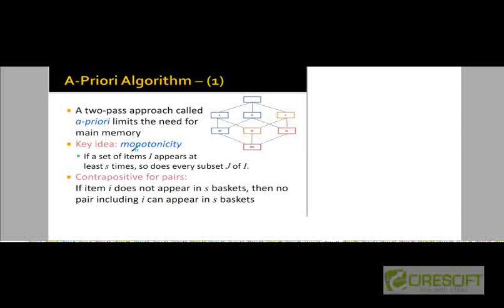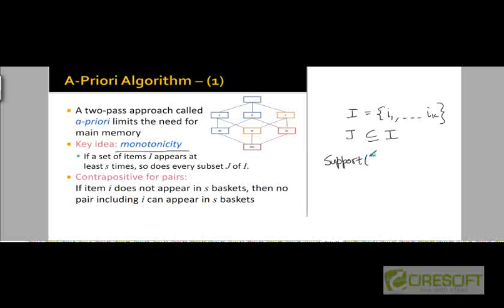The A Priori algorithm is going to use a property called monotonicity, which is defined as follows. If a set of items — call it I — appears at least s times, then so does every subset J of I. If we compare the support of J with the support of I, the support for J is going to be at least as large as the support for I.